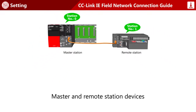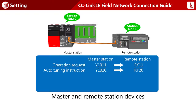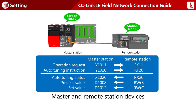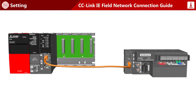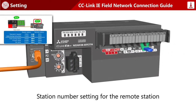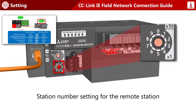Corresponding devices are assigned so that the master and remote stations can exchange data. The procedure for hardware settings is described. Station numbers for remote stations are set using the switch on the front of the module. The remote station is station number one, so set the station number to one using the single digit switch.